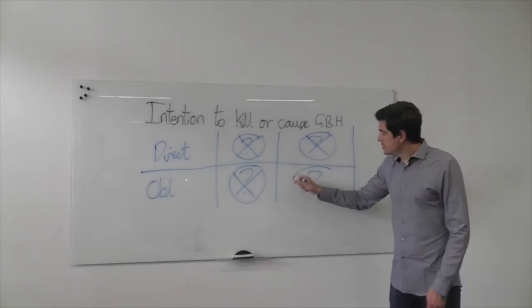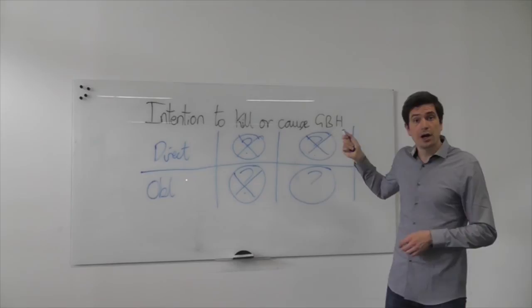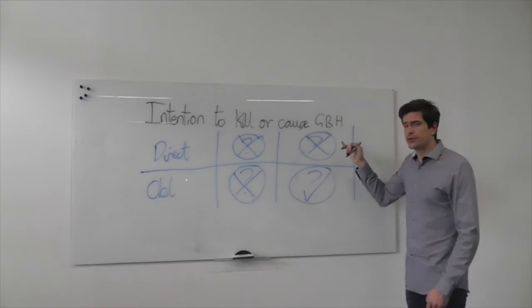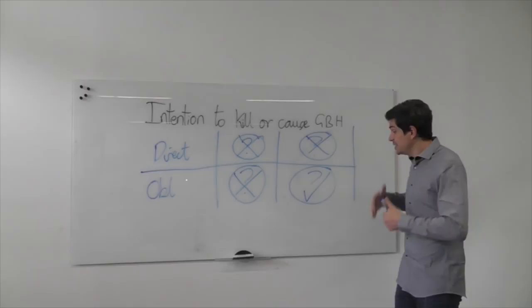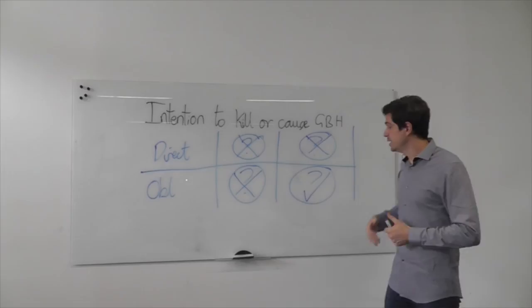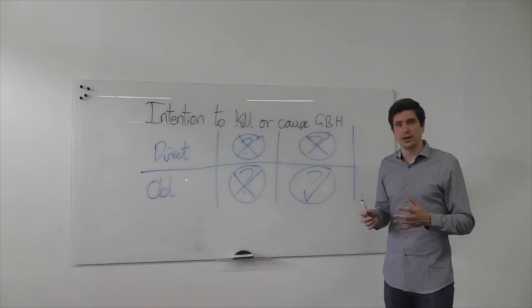And it's then the last option where you think, well, did he at least foresee as a virtual certainty that grievous bodily harm would be caused? And the answer here was yes. Although he didn't want grievous bodily harm to be caused, he did foresee it as necessary. He did foresee it as inevitable in order to kill the victim who he tried to kill. He saw it as basically inevitable that his friend would at least suffer serious bodily harm.